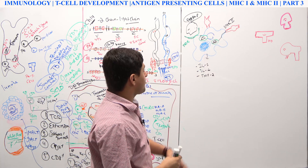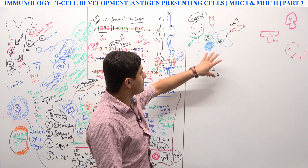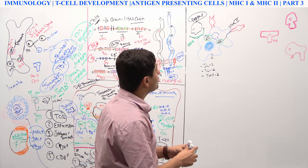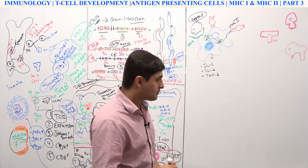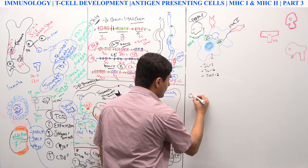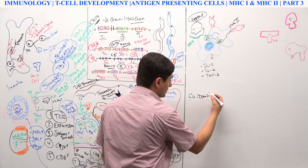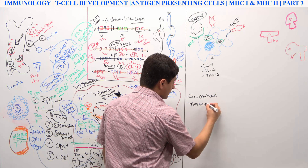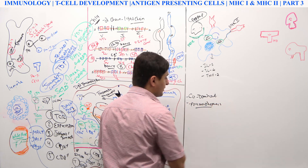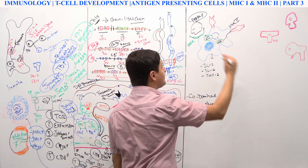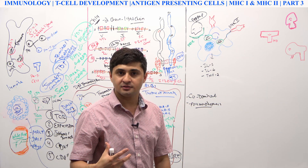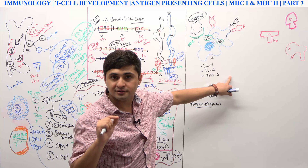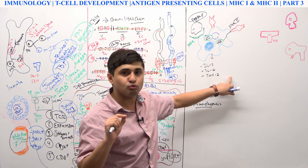Now I have to discuss how MHC1 and MHC2 are synthesized. Whenever we talk about MHC1 and MHC2 synthesis, there are a couple of important concepts: one is called codominance, and another is called polymorphism. Whenever you get the MHC complex, you get the alleles or genes from your mother and your father.